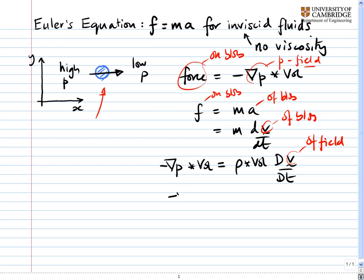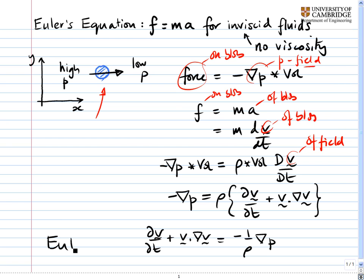Now, let's divide through by the volume on both sides. We're going to get minus grad P equals rho, and then expanding out d by dt, we're going to get curly dV of the field by dt plus V of the field dot grad V again of the field all in brackets. And this is usually rearranged to give dV by dt plus V dot grad V is equal to minus one upon rho grad P. And that is Euler's equation.